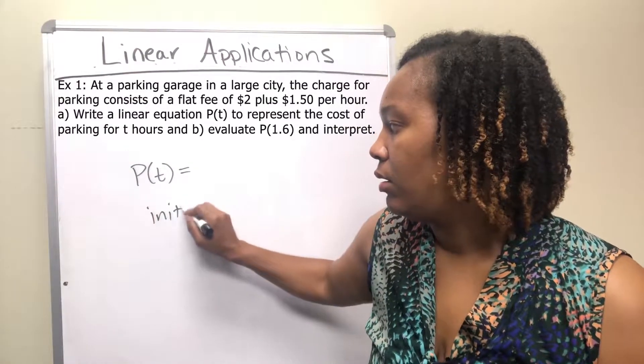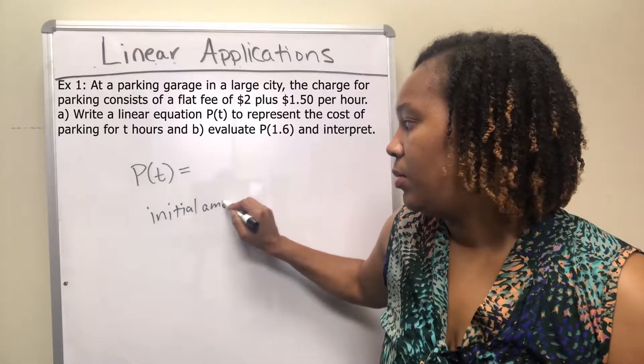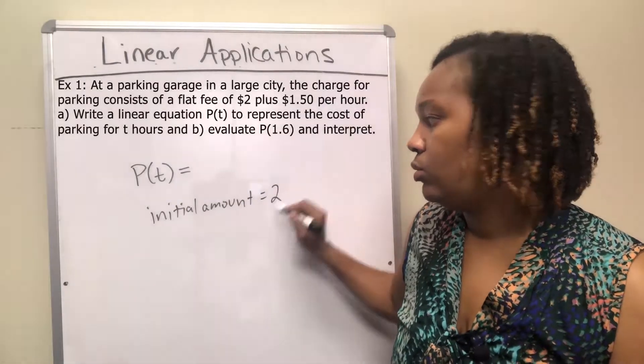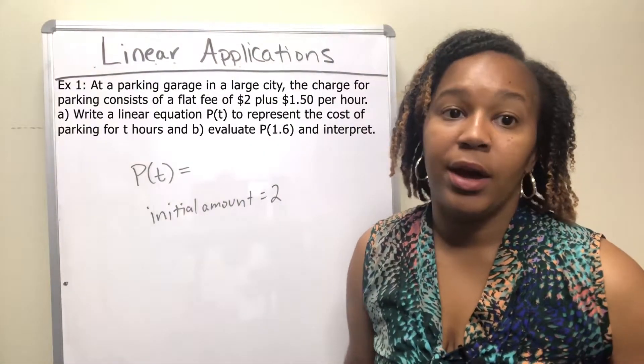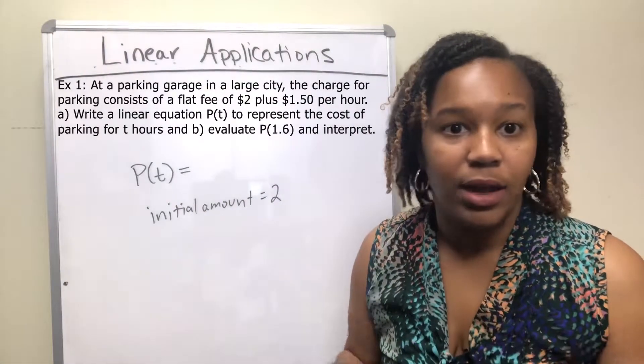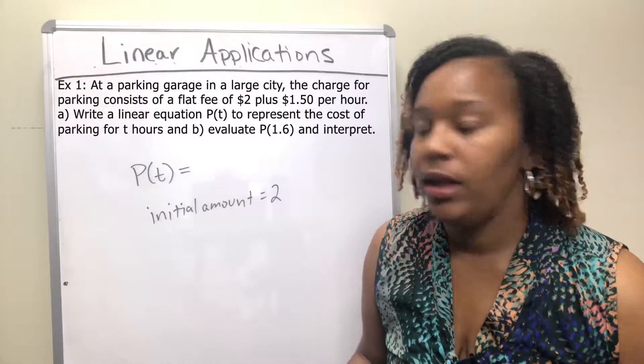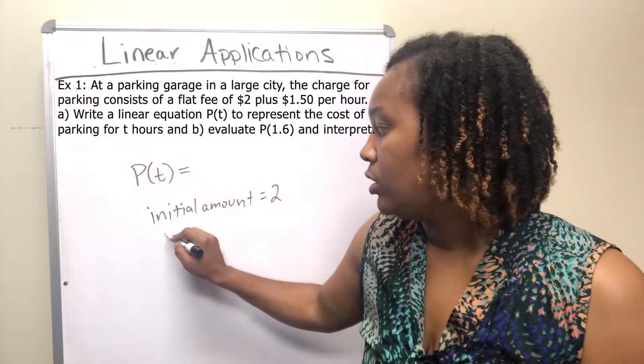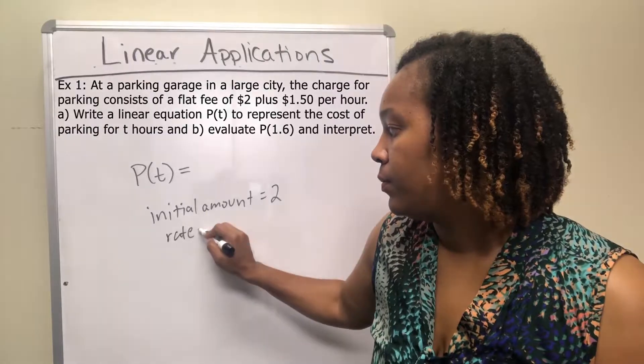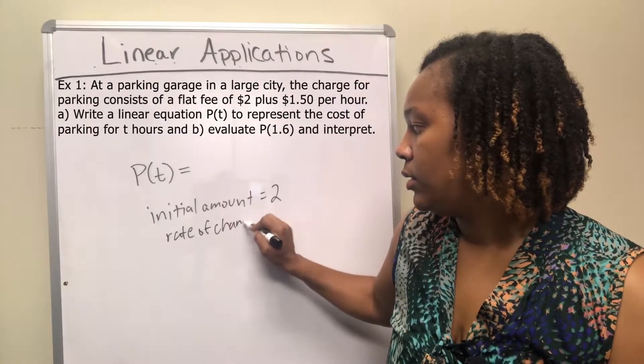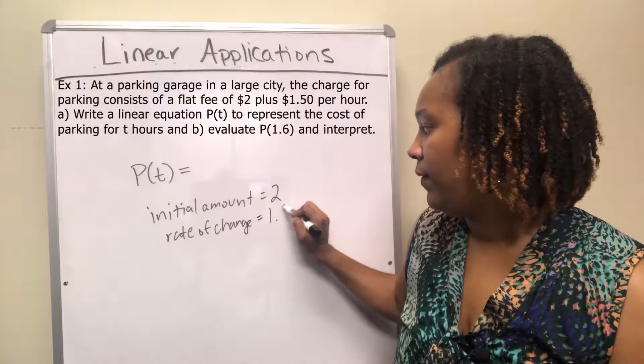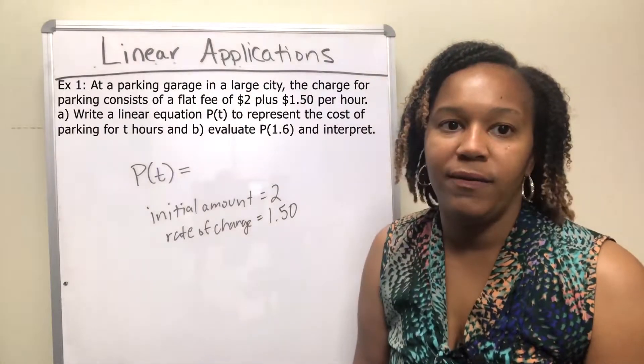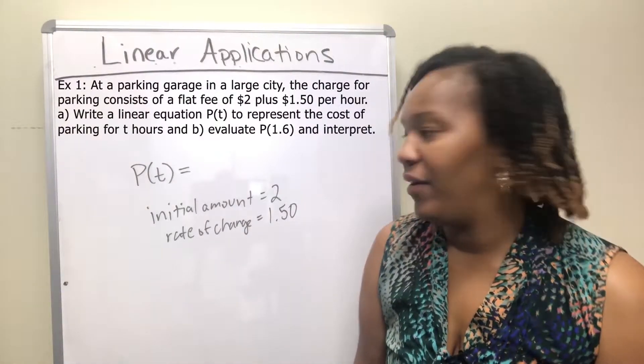Since there is a flat fee of $2, then our initial amount is going to be equal to 2, and that means no matter what, even if you just drive through the parking lot, you have to pay $2 because that's a flat fee. And then for each hour, so our rate of change, for each hour it's $1.50.